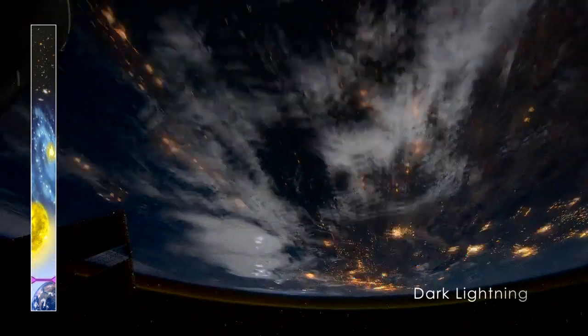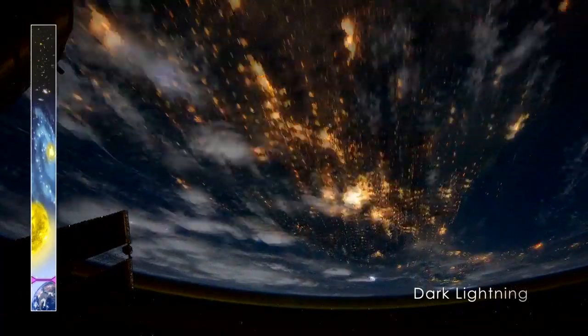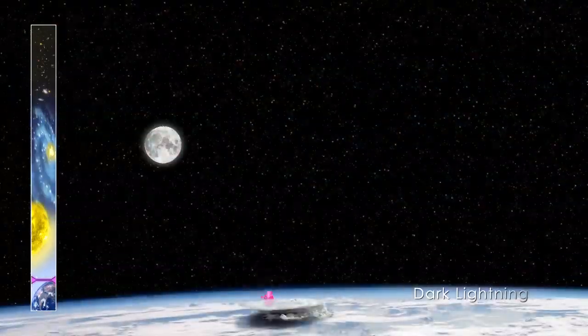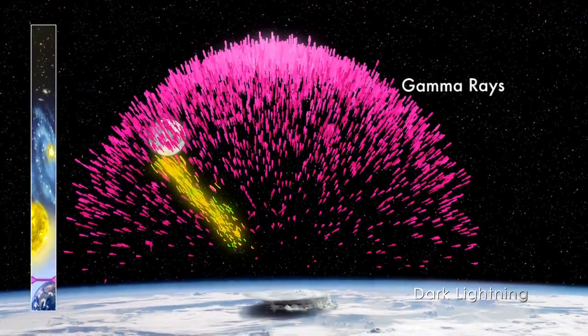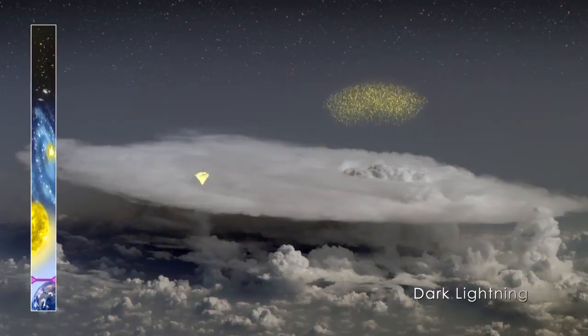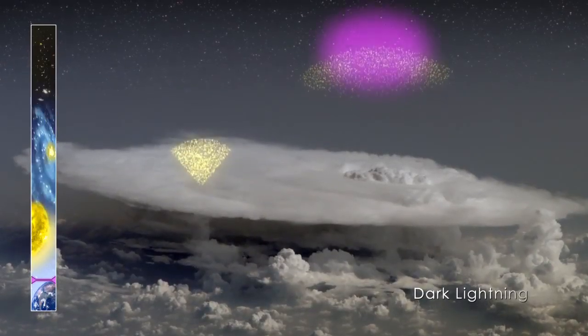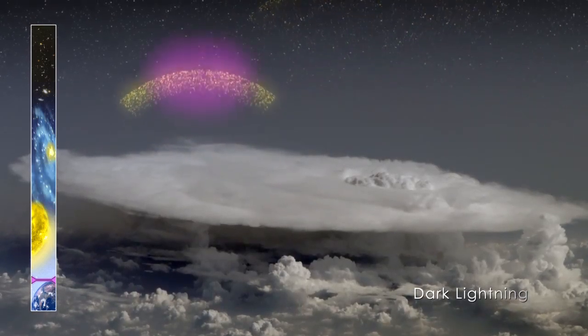New observations by NASA's Fermi Gamma-ray Space Telescope show that thunderstorms make antimatter. The process starts with a terrestrial gamma-ray flash, or TGF, an intense pulse of gamma rays originating from thunderstorms. Scientists have discovered that radio signals, once thought to be produced by the lightning that triggers a TGF, are in fact broadcast by TGFs themselves.